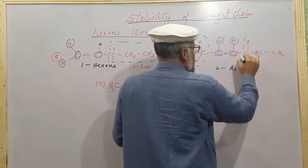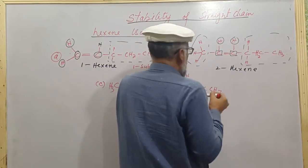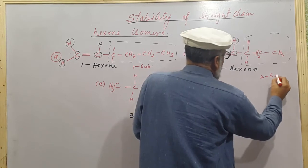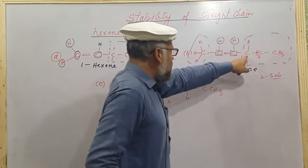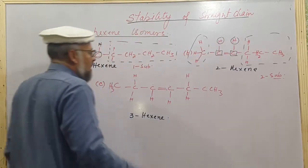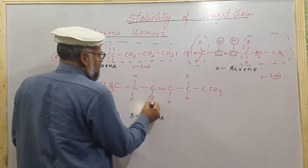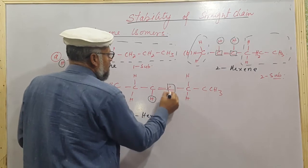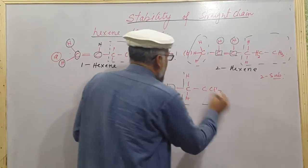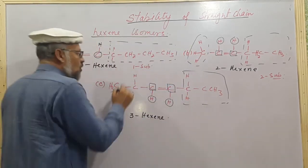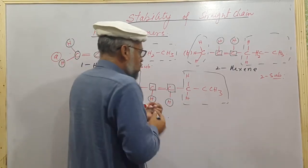For hex-2-ene, we can see one alkyl group on this side and another alkyl group on the other side — so there are two substituents around the double bond, with two hydrogens elsewhere. Similarly for hex-3-ene: one alkyl group on one side and another alkyl group on the other side, meaning it also has two substituents around the double bond.